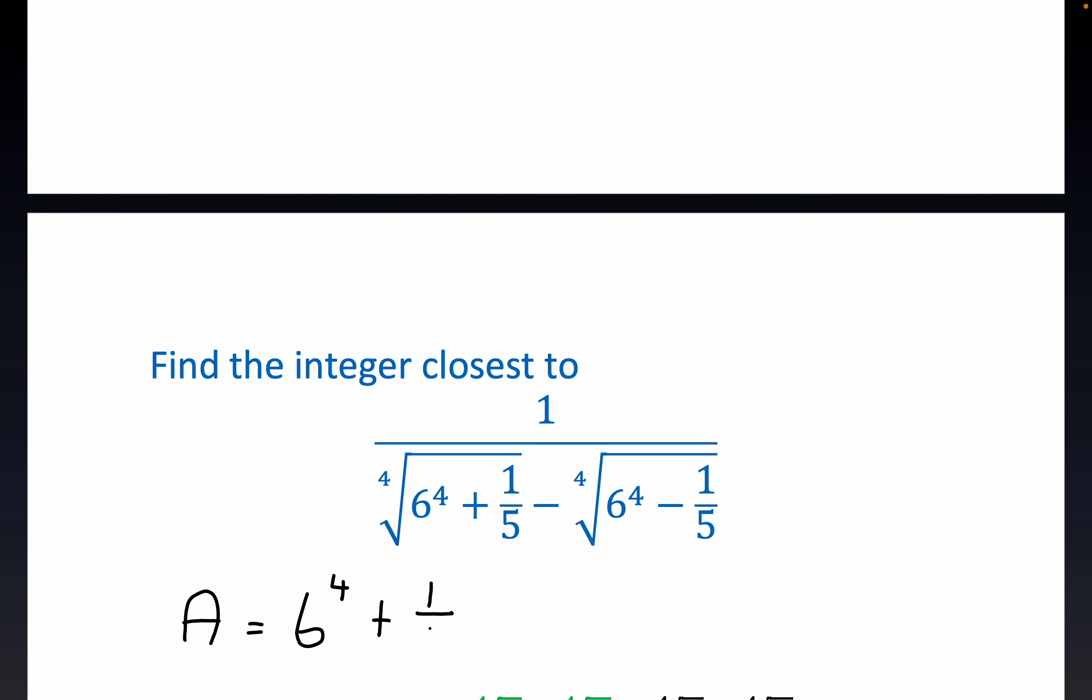You can probably see why I'm doing this. The difference of two squares result or multiplying through by the conjugates is going to come in super handy here. Let's do B equals six to the fourth minus one-fifth.